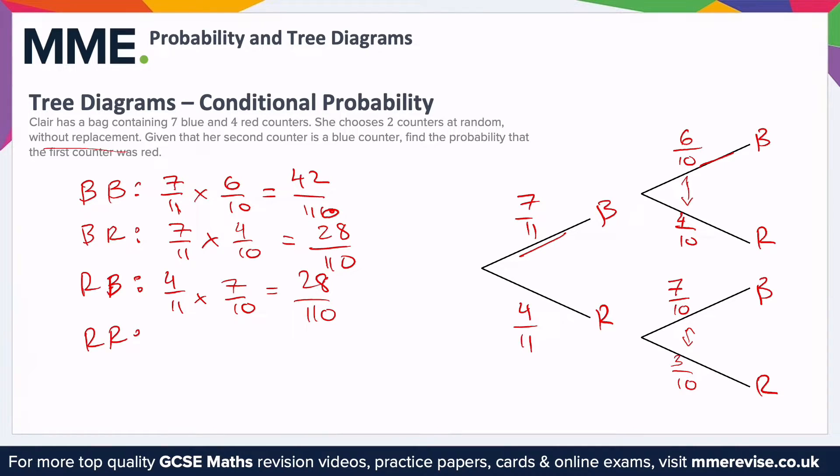Or we could have a red, then a red, which is four elevenths times three tenths, not three elevenths, because three tenths there. Four times three is 12, 11 times 10 is 110.